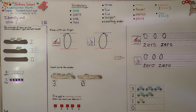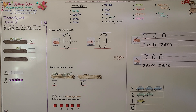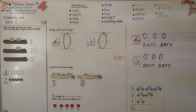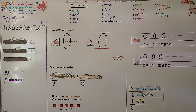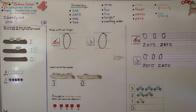Zero is the number we use when we have none. Our next lesson is going to be in chapter two, which is about comparing numbers to five — we're going to talk about same numbers. I hope you have a really great day and I hope you'll join me for next time. Bye!